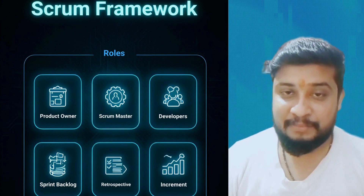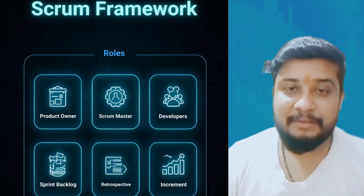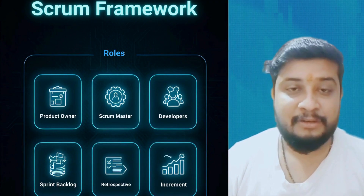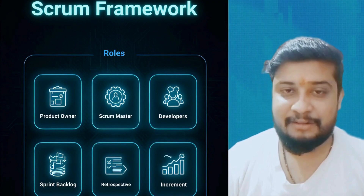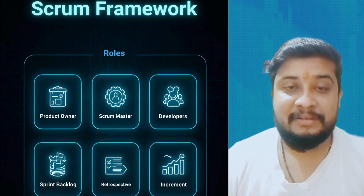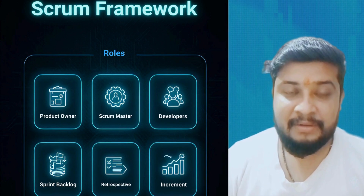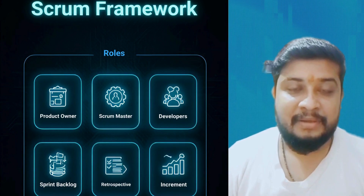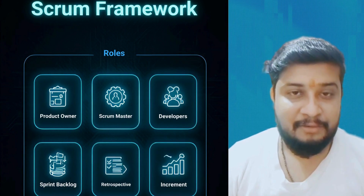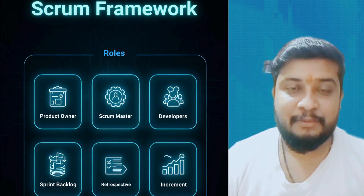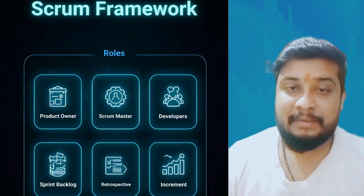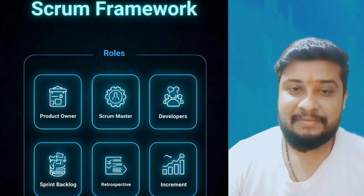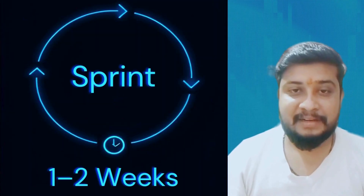What exactly is Scrum? Scrum is the most popular framework inside Agile. Agile is the mindset and Scrum is the daily working structure. It defines roles like Product Owner, Scrum Master, and Developer. It defines events like Sprint Planning, Daily Standup, Sprint Review, and Retrospective, and artifacts like the Backlog and the Increment.